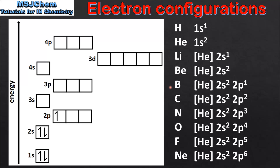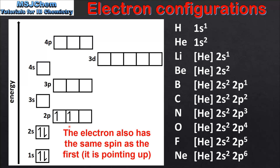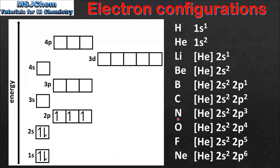Next is boron which is He2s2 2p1, and we put one electron in the 2p sub level. Moving on to carbon which is He2s2 2p2. Note that when we add the second electron to the 2p sub level it goes into the next available empty orbital. Moving on to nitrogen which is He2s2 2p3, so once again the third electron goes in the next available empty orbital.